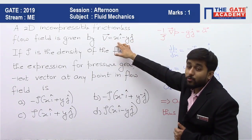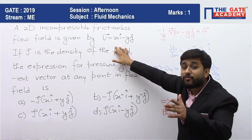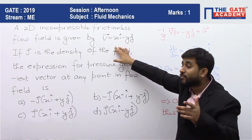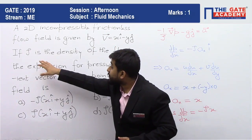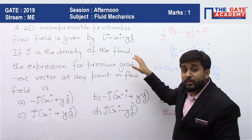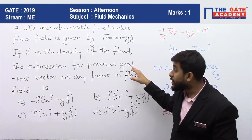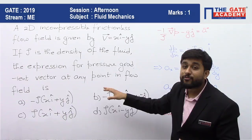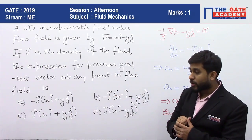And also if you can make out these velocity components, they are not a function of time. So this is a steady state flow. Now, what they are saying is if rho is the density of the fluid, the expression for pressure gradient vector at any point in the flow field is, and some options are also given.